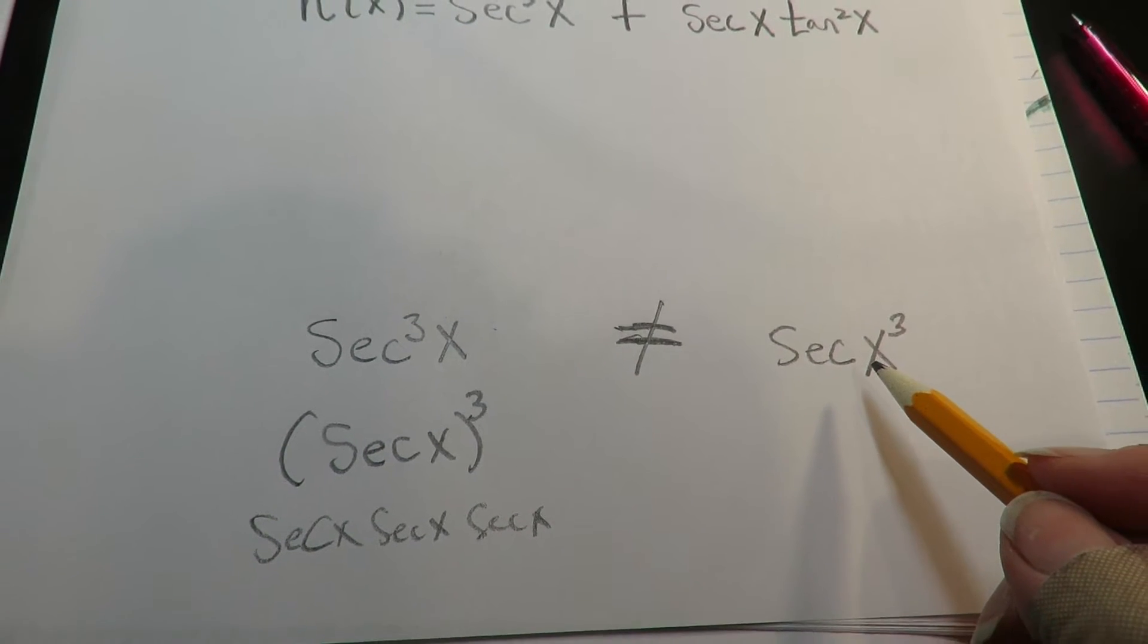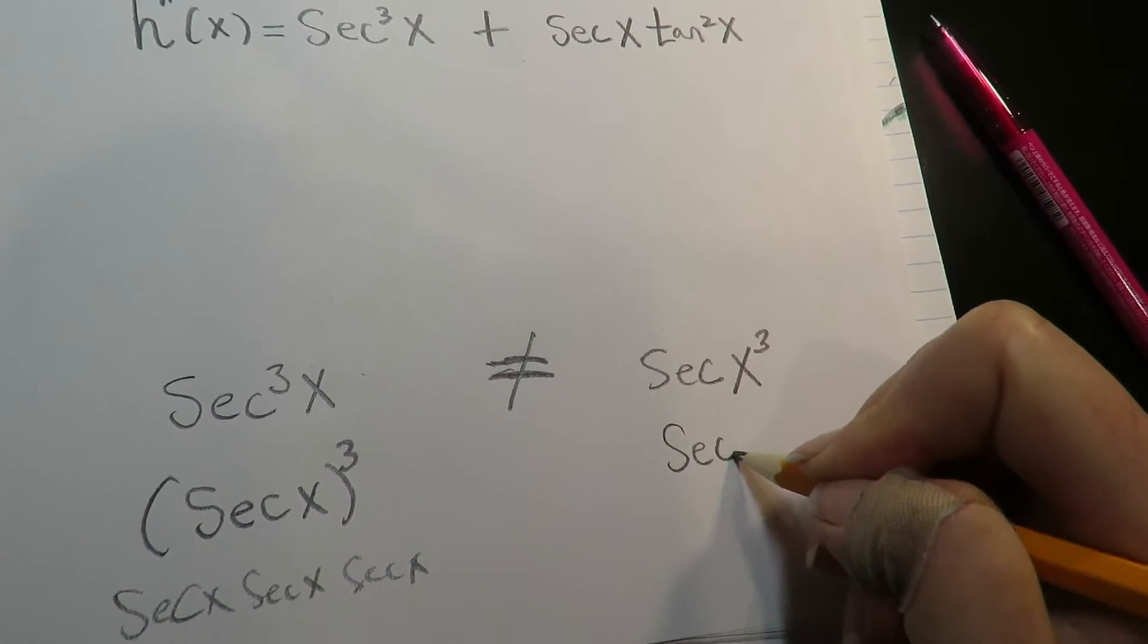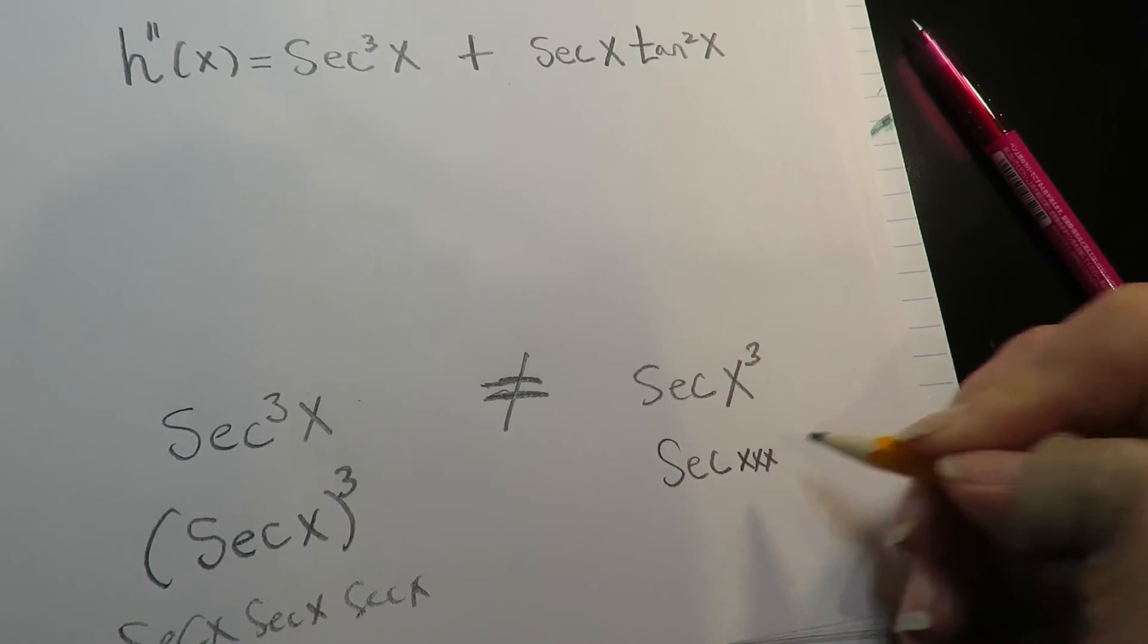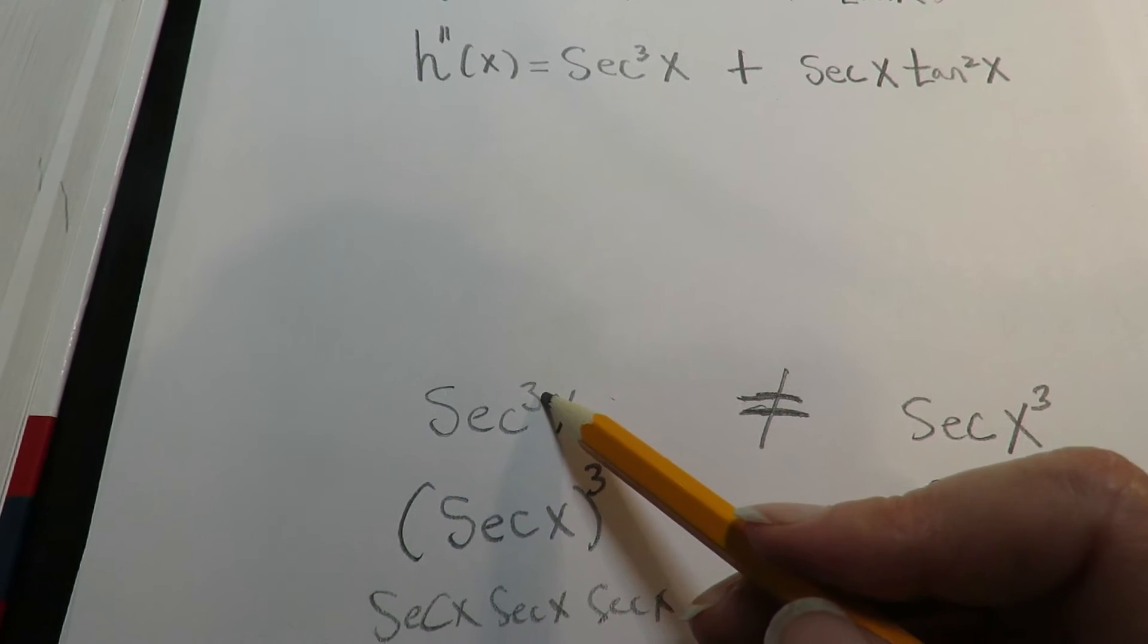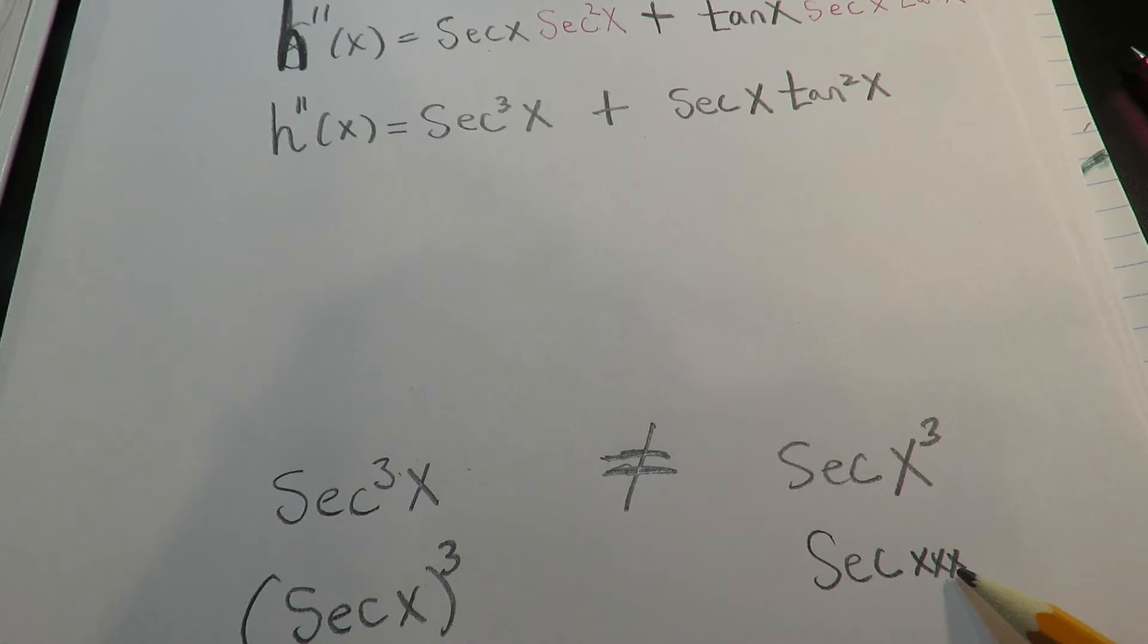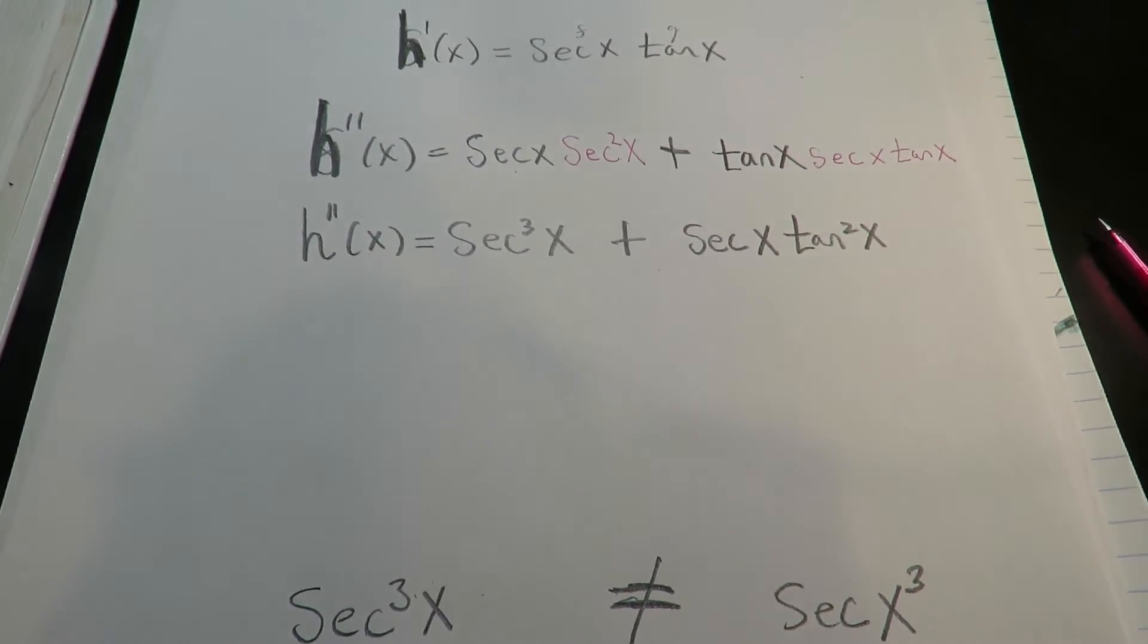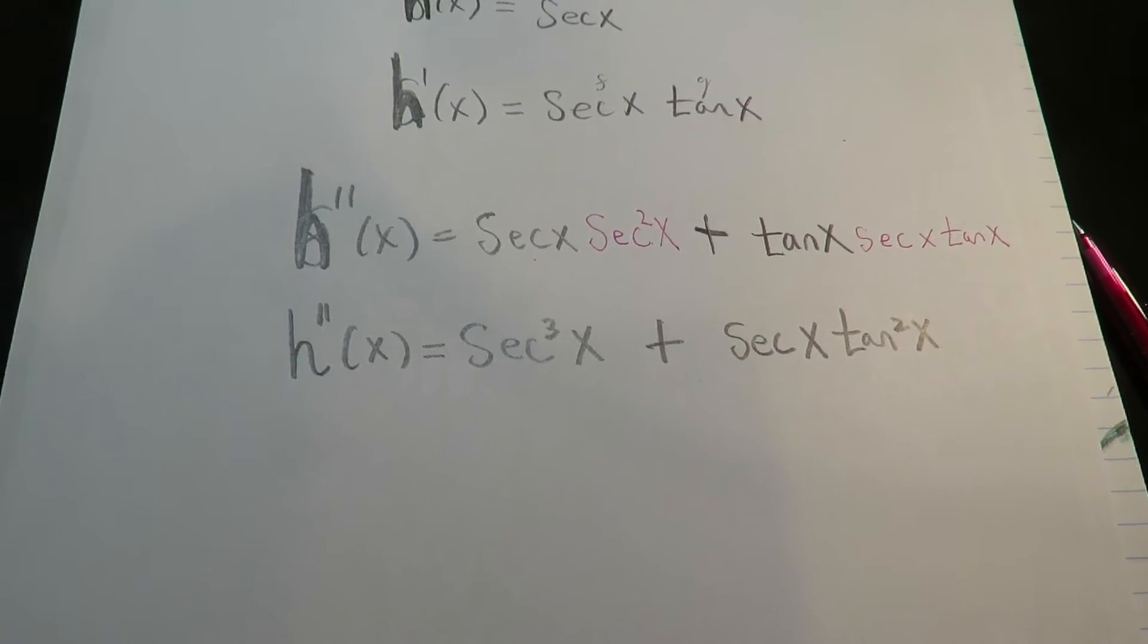What do you think this means? Because the three now is on the x, it's not on the trig. This means one secant with three x's inside of it, which is not equal to this. When the three is on the trig it means you have three trigs. When the three is on the inside it means you have three inside. Please watch that, that is going to become really important especially in the next section.